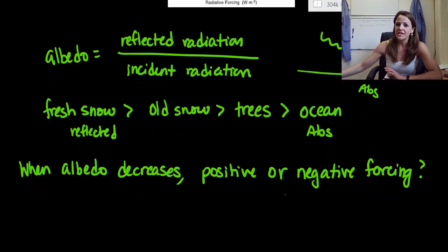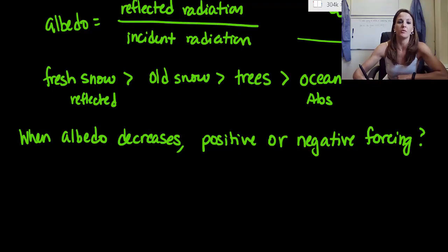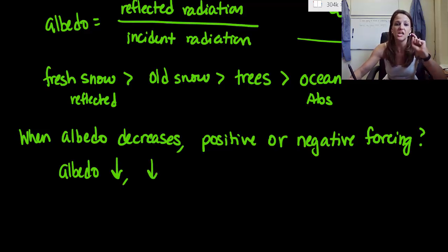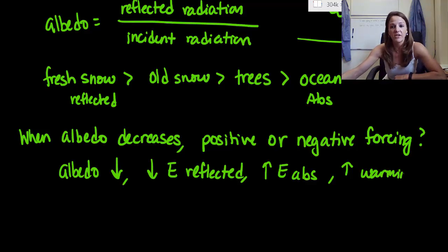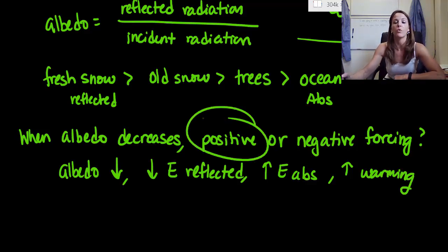Hopefully we did, but if you didn't, let me show you how I would have approached this problem. So we are saying that albedo decreases. So if albedo decreases, that means we have a decrease in the energy that is reflected, which means we must have an increase in the energy that's absorbed. And if we're actually increasing the amount of energy that's absorbed, we absolutely have to have an increase in warming. So if we have an increase of warming, we definitely have more positive forcings.